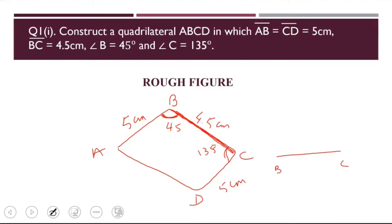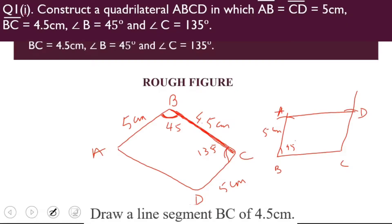At B, I will make an angle of 45°. At C, I will make an angle of 135°. Then I have BA, so I will cut out BA equal to 5 cm. I know CD is also 5 cm, so I will cut out CD as 5 cm. Then I will join these two to get the quadrilateral ABCD. So let us see the steps of construction now.